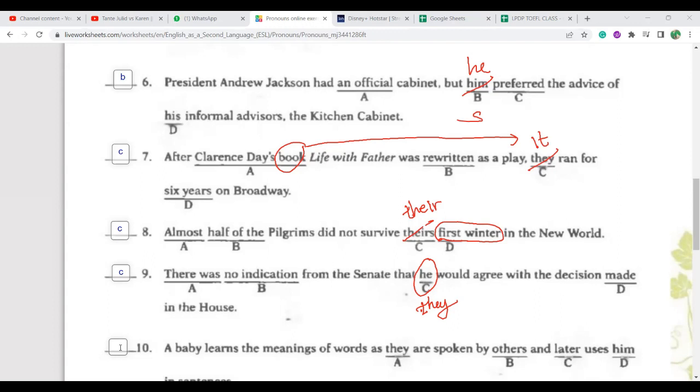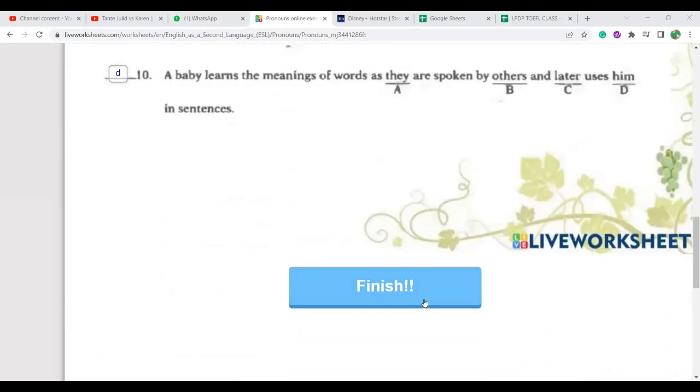Number ten: them. Oh my God, they. Why did I write C? Him is wrong, it should be them. Because it refers to whom? The meanings of words. A baby learns the meanings of words. Meanings, plural. As they are spoken by others and later uses them. Clear for number ten? Okay, good. Finish, check my answers. Must be ten. Because it's teamwork. Ten, okay. Any questions? No.